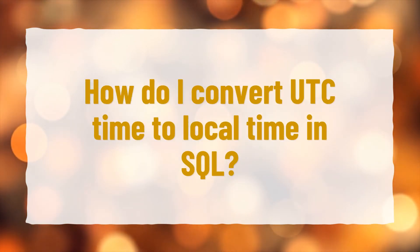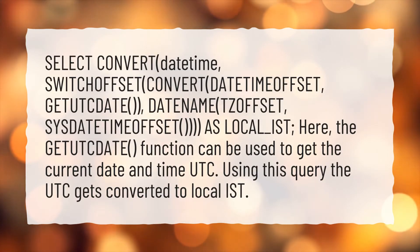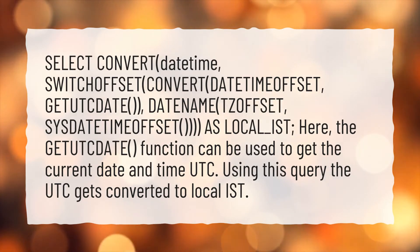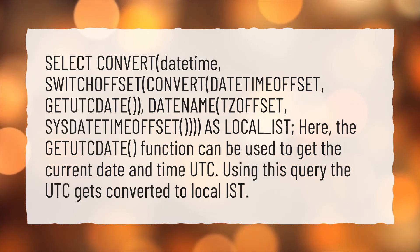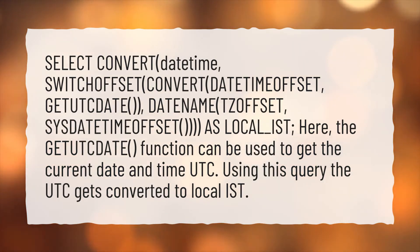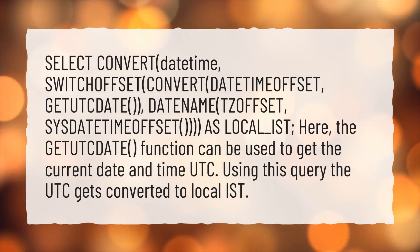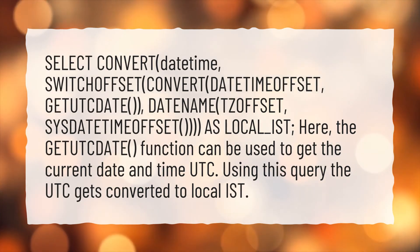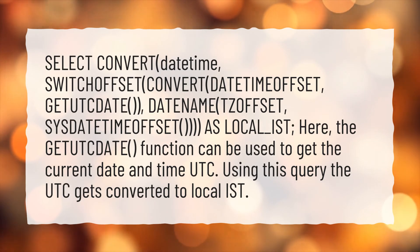How do I convert UTC time to local time in SQL? Use a SELECT CONVERT datetime with SWITCHOFFSET, converting using DATETIMEOFFSET of GETUTCDATE, and DATENAME of TZOFFSET from SYSDATETIMEOFFSET, as local_east. The GETUTCDATE function can be used to get the current date and time in UTC. Using this query, the UTC gets converted to local east.